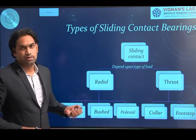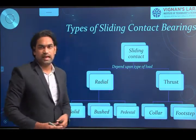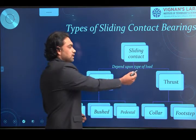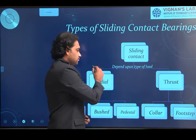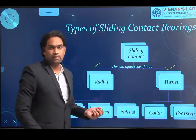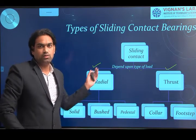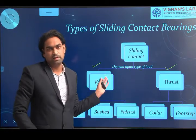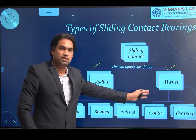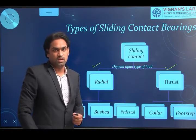Coming to the classification of sliding contact bearings: again based upon the type of load, they can be divided into radial bearings (supporting radial loads) and thrust bearings (supporting axial loads). And depending upon the construction — in your previous course of machine drawing you already drew various types of bearings — we have different types under both radial and thrust bearings.